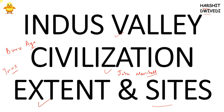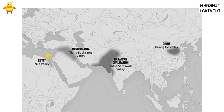The people of this civilization interacted a lot with other places. For example, they had extensive commercial and trade relationships with the people of the Mesopotamian civilization. Now here comes a question: what were the other civilizations at that point of time?